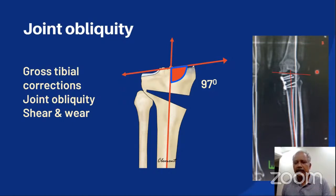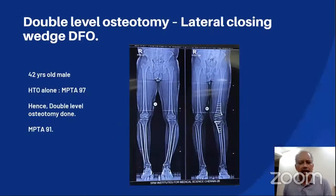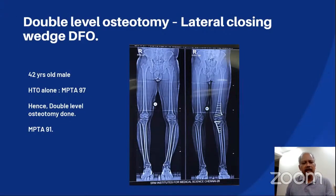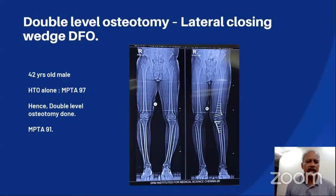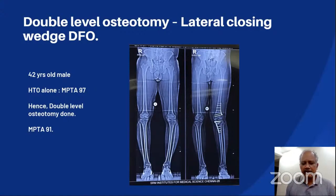In another example of a 42-year-old male, preoperative planning revealed that if HTO alone had been done to correct his deformity, it would have resulted in an MPTA of around 97 degrees. In young patients, we accept an upper limit of MPTA of around 93 degrees. Because the patient was young, we didn't want an oblique joint line, so a double-level osteotomy was performed, resulting in an MPTA of around 91 degrees.